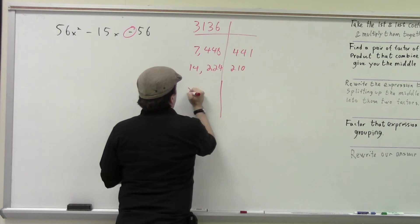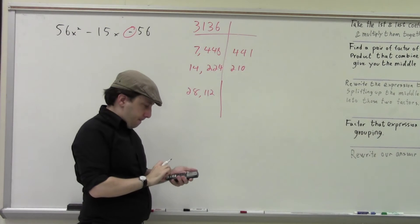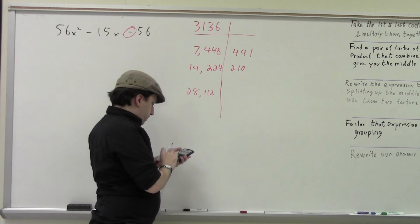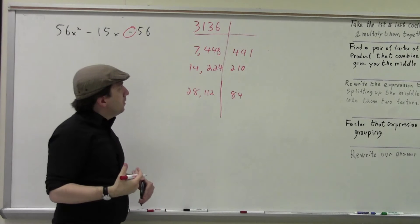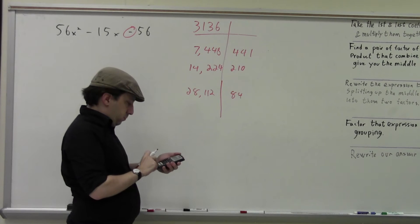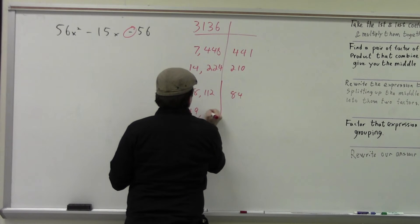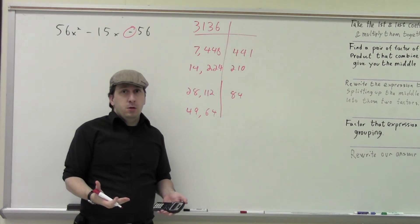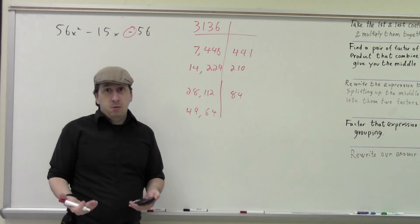Dividing by 14, my other factor is 224, and my difference is 210 — still too big. So I try 28: I get 28 and 112, still too big. 112 minus 28 is 84. Let's try 49. As it turns out, 49 minus 64 is 15, and that's what we want.